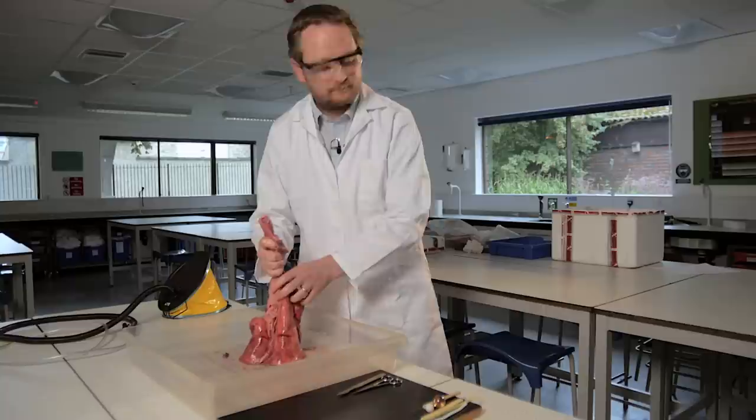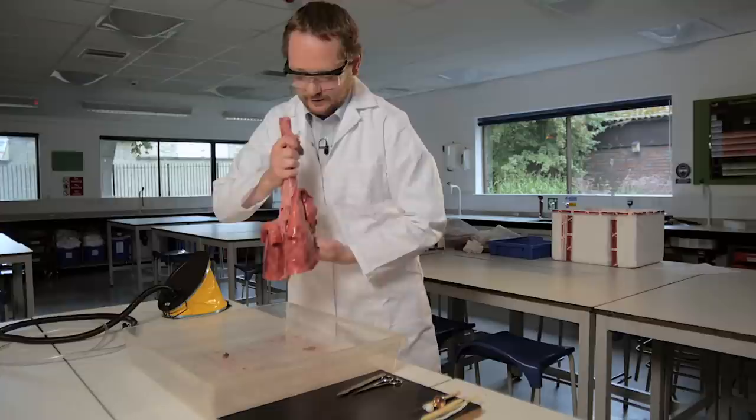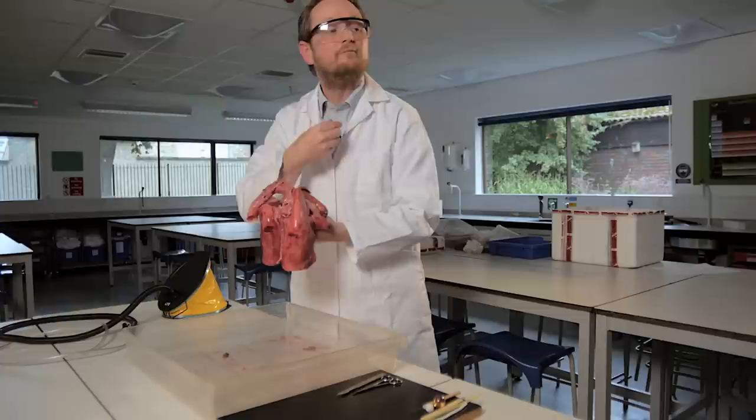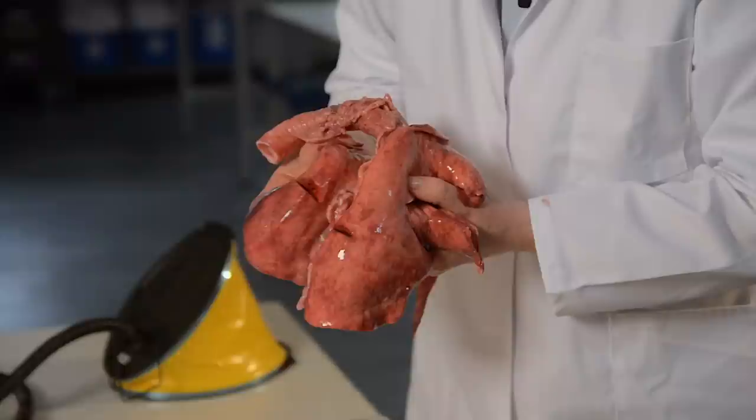The first thing I like to do with any form of dissection is relate it to the human anatomy. Students are more interested in their own bodies than they are of the internal workings of a lamb. So I'd hold it up to my body and say, here is the trachea. This is pretty much exactly like the trachea in my neck going down into my chest.